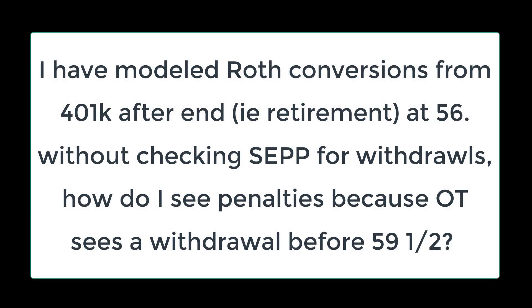I have modeled Roth conversions from a 401k after end, without checking 'set for withdrawal.' How do I see penalties because the software sees a withdrawal before 59 and a half?